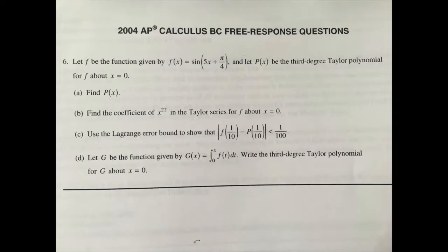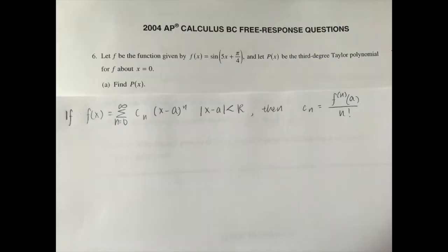The question asks, let f be the function given by f of x equals sine of 5x plus pi over 4 and let p of x be the third degree Taylor polynomial for f about x equals 0. Part A asks, find p of x. The structure of a Taylor series of the function f at a looks like the given power series where c of n equals the nth derivative of a over n factorial.